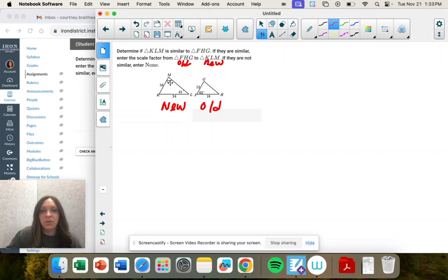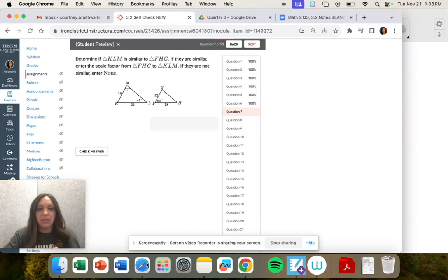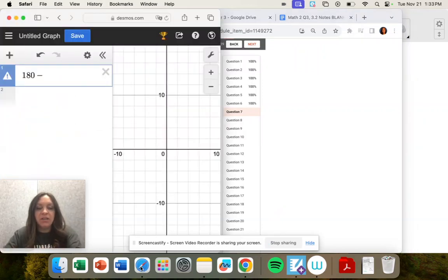So notice we have some angles here. We need to see if that's 62. I'm going to take 180 minus, what are my angles again, 77 and 41.